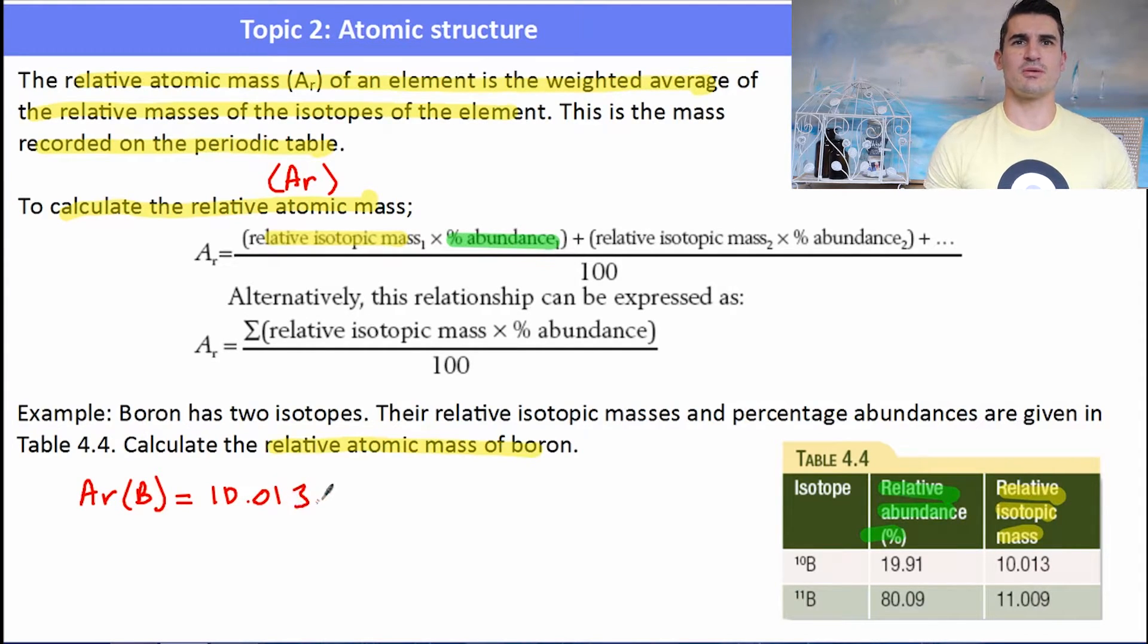So the relative atomic mass of boron will be, alright let's look at the smaller sample first. It has a mass of 10.013, and then we multiply that by its percentage abundance. Then we add it to its next isotope, which has a weight of 11.009, and we multiply that by its percentage abundance, divided by a hundred.